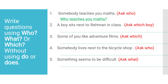Now see, in this exercise: write questions using who, what, or which without using do or does. First one: 'Somebody teaches you maths.' Here we have to use who. The question is: 'Who teaches you maths?' Let's move to the second one.